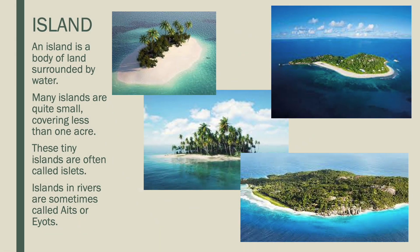Another type of landform is an island. An island is a body of land surrounded by water. Many islands are quite small, covering less than one acre. These tiny islands are often called islets. Islands in rivers are sometimes called aits or eyots.